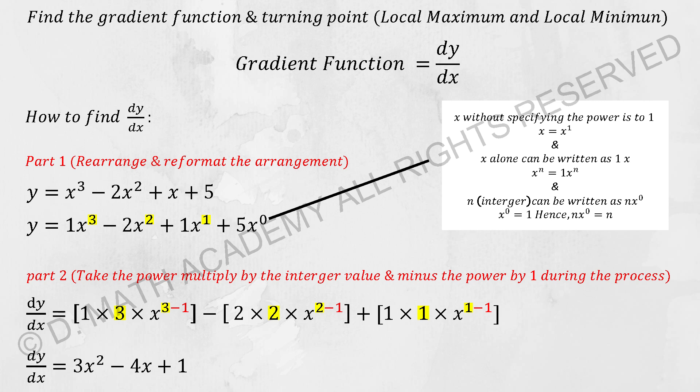So it becomes 3 minus 1, followed by minus bracket 2 times 2x to the power of 2 minus 1, plus 1 times 1x to the power of 1 minus 1. For the last one, which is 0 times 5x to the power of 0 minus 1, I didn't include this because 0 times 5 will give you 0 immediately.